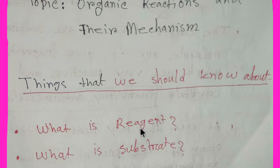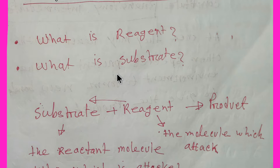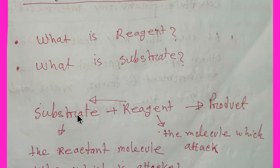Let me give you an example. Here is substrate and here is reagent. Reagent reacts with substrate and produces product. Reagent is the molecule which attacks — that is, reagent is an attacking molecule.